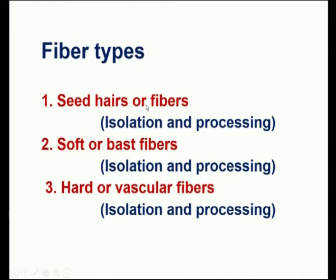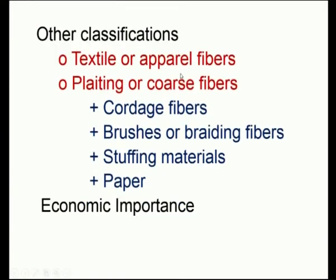Types of fibers: seed hairs are fibers involving isolation and processing. Similarly, soft, hard, or bast fibers involve the same isolation and processing. The third class is hard or vascular fibers. Based on these types we can make three categories to study in detail. Another classification includes textile or apparel fibers, and plating or coarse fibers, which are subdivided into cordage fibers, brushes or braiding fibers, stuffing materials, and paper — all of which are of economic importance.